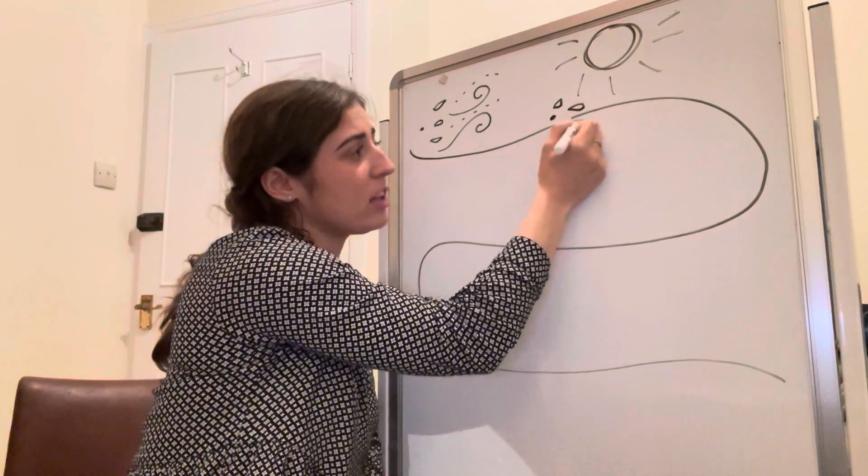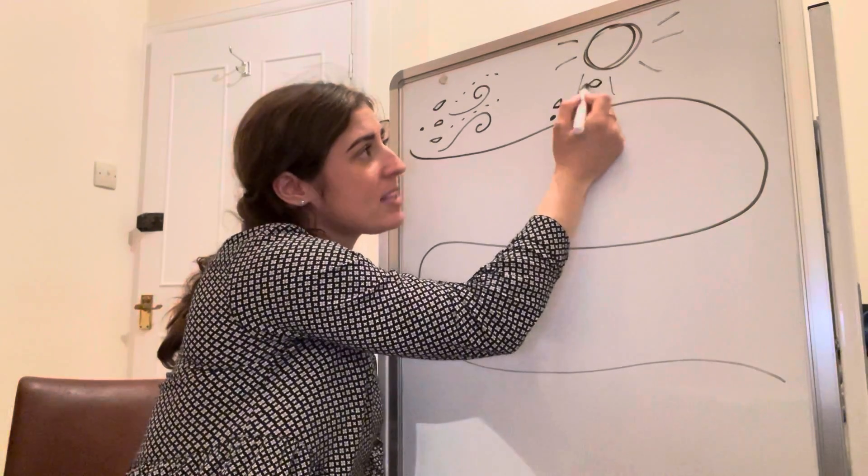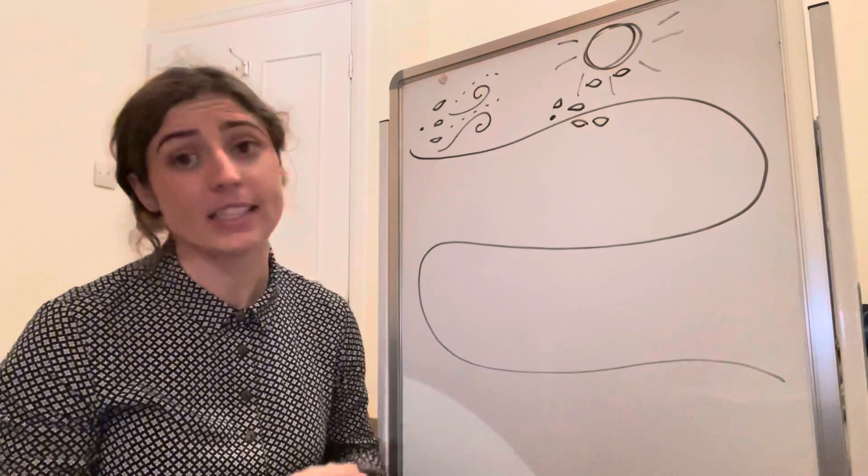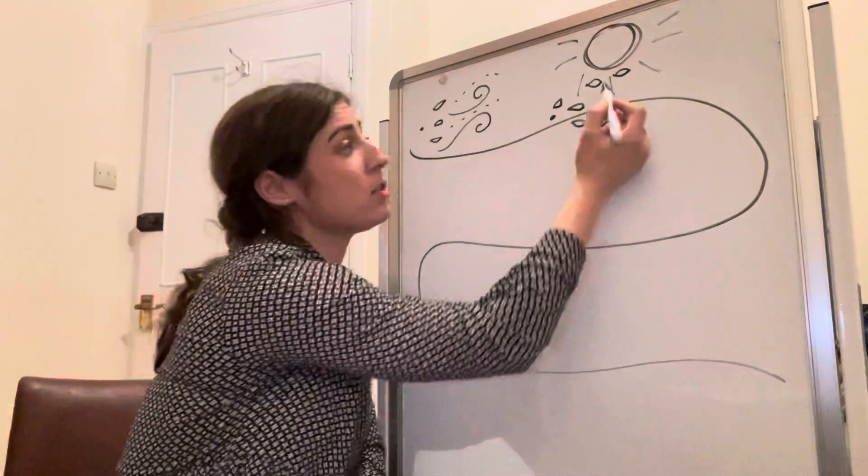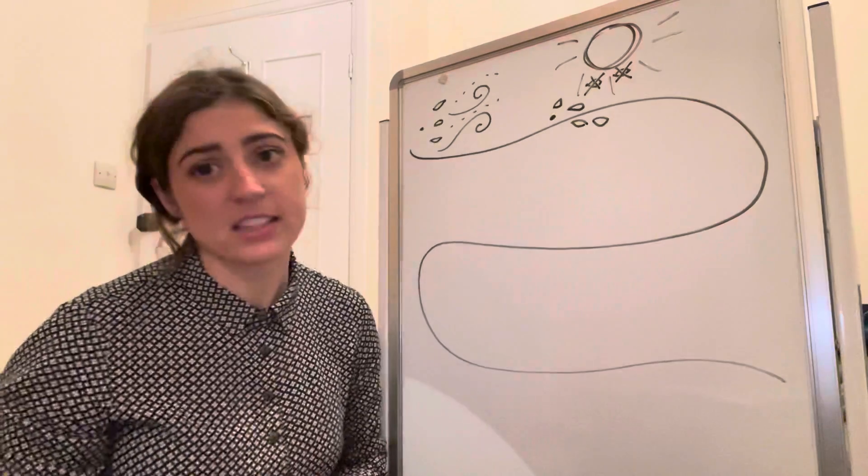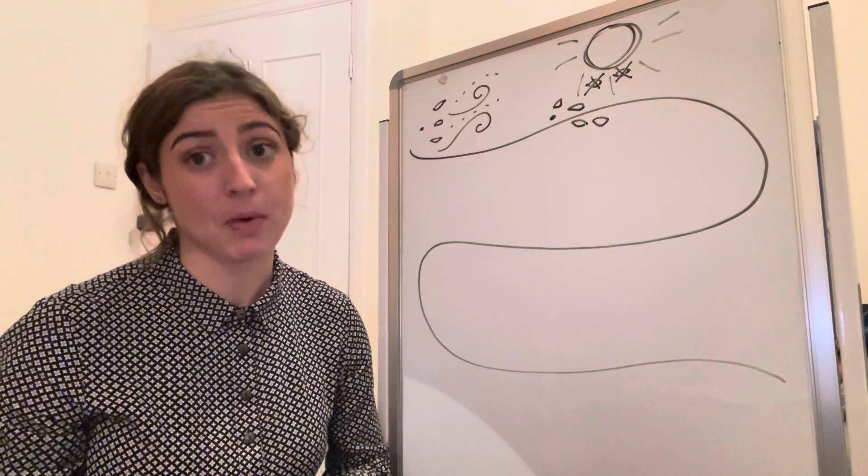Here along this journey on this path, a couple of the seeds go too close to the sun and the sun is too hot and the seeds don't survive. So to show that I can do a little X there to show that the sun was too hot, the seeds couldn't grow. So that's the first part of the story.